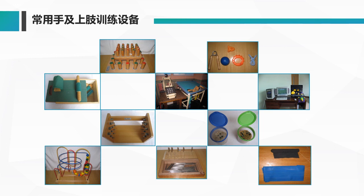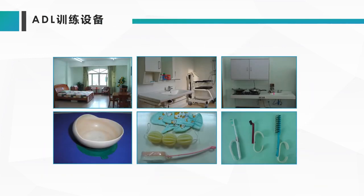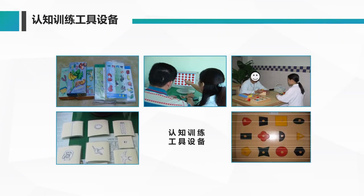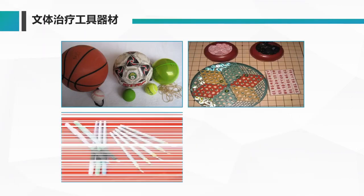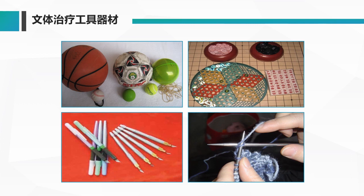图中展示了常用的手和上肢训练设备，包括压板、电脑、跳棋、围棋等。日常生活序列设备包括：牙刷（自己刷牙）、洗手、铺床，以及简单的烹饪等。认知训练工具设备通过认知颜色、认知图形、认知小动物、花草树木等进行训练。文体治疗工具器材包括足球、篮球、羽毛球、网球、跳棋、穿衣钩、织毛衣的毛衣针等。辅助器材主要对截肢的康复有很大的作用，如腋杖、手杖、轮椅等。